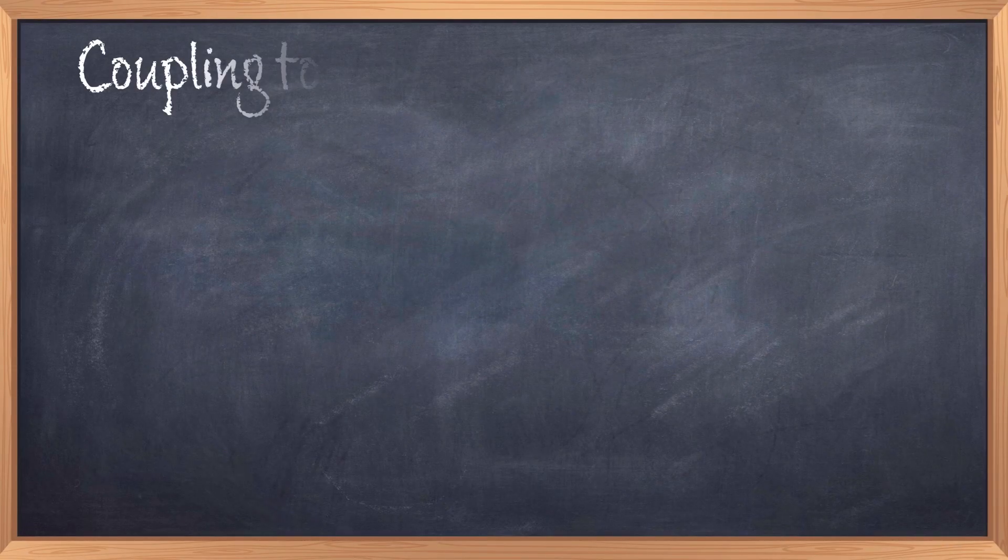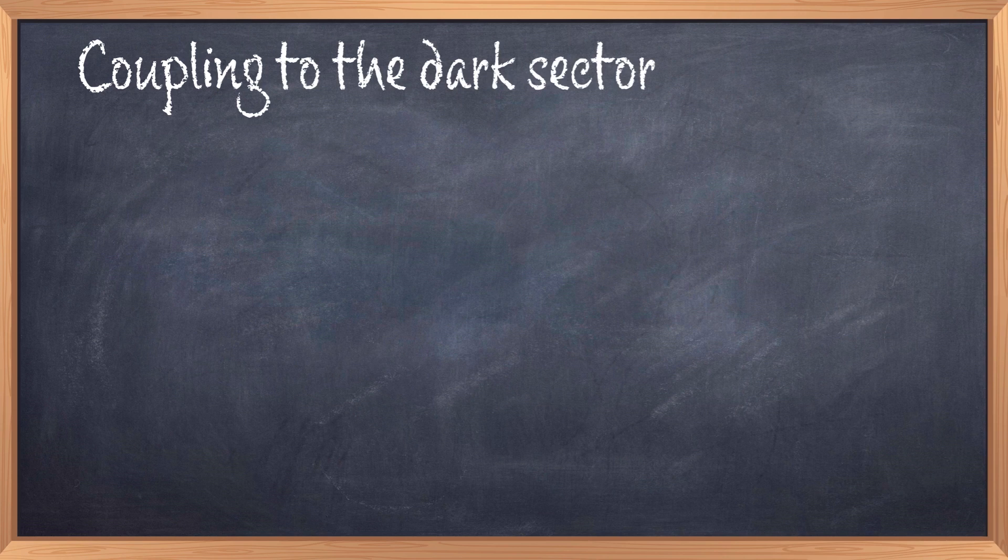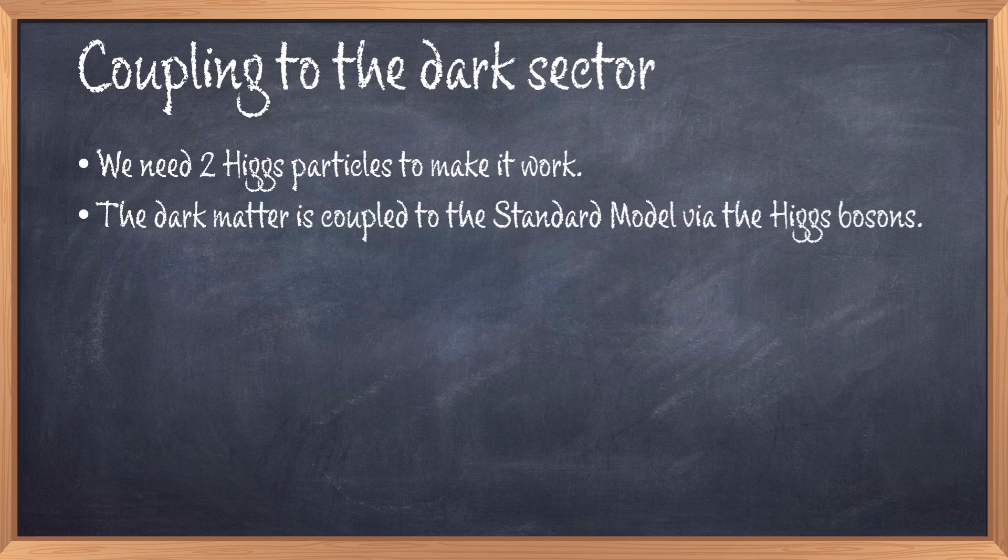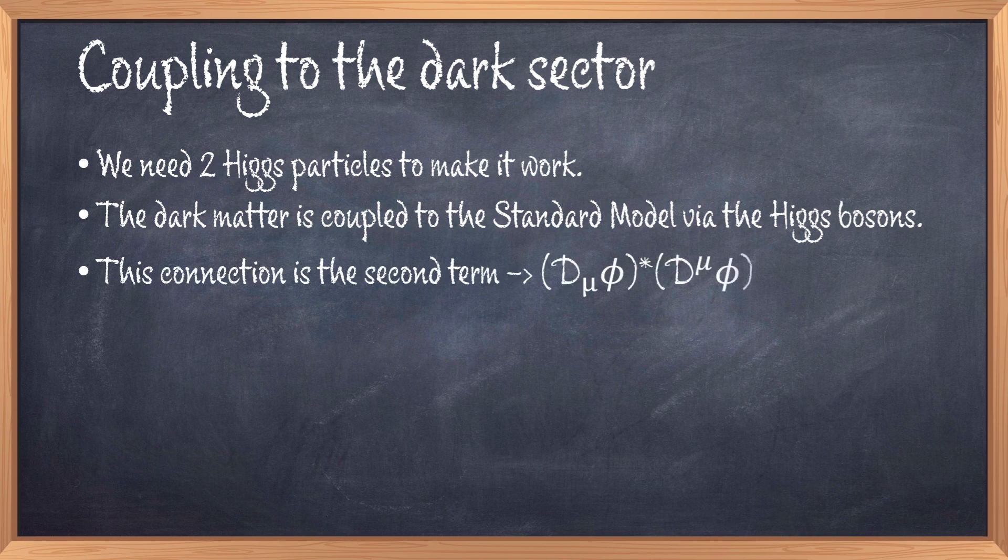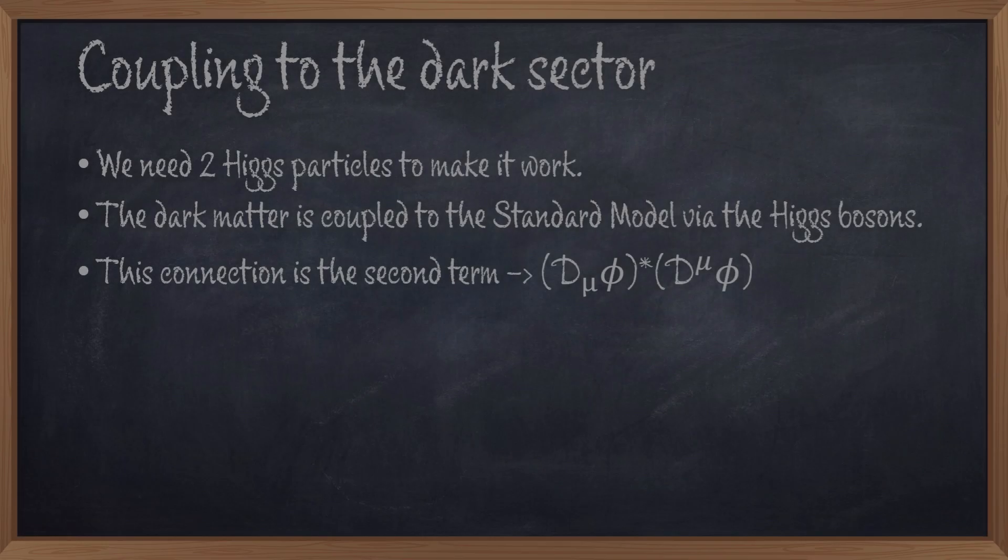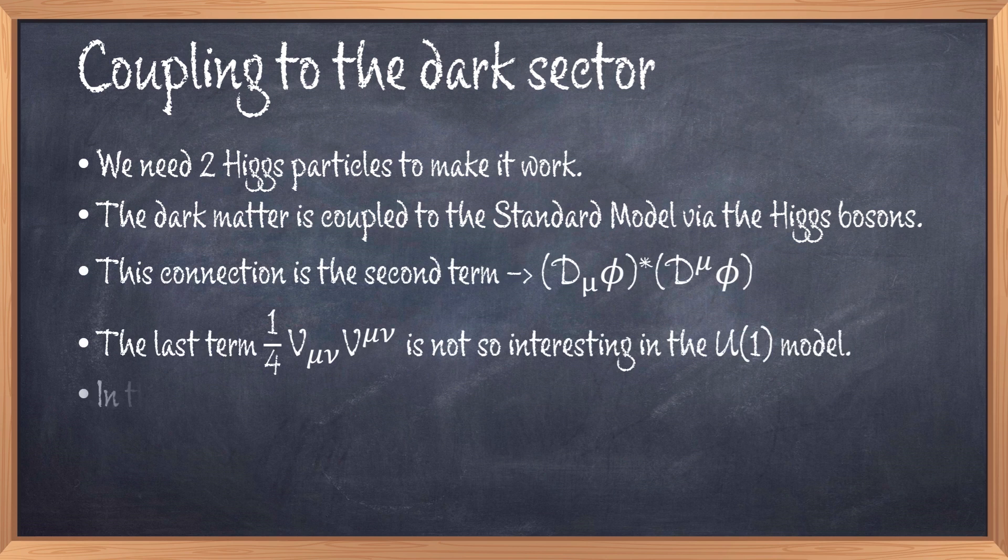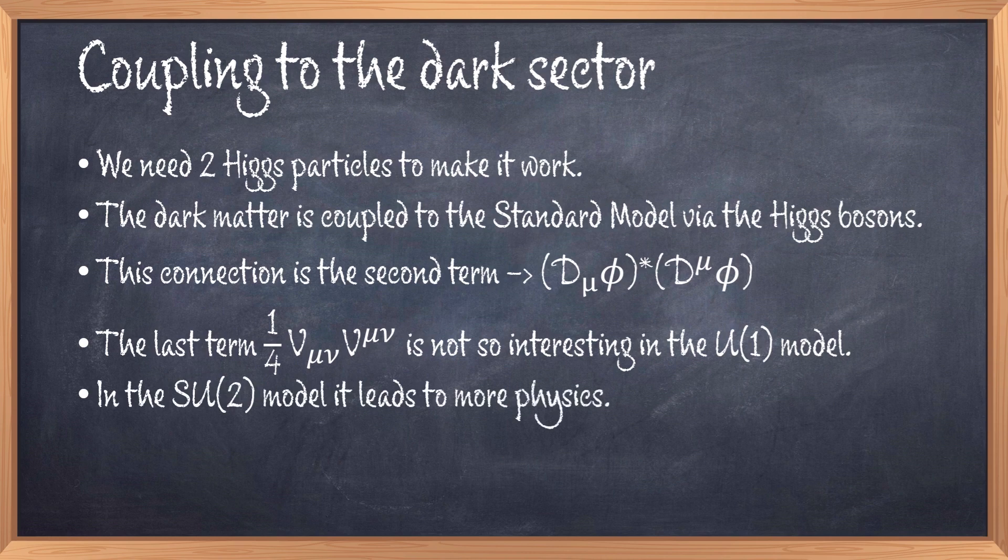An obvious question is how this standard model is now connected to the dark matter sector. In other words, how does the standard model couple to the dark matter vector boson particle? We just discussed the Higgs part, and one of the reasons we need this new Higgs potential is that we get a way to connect the standard model particle, which we know exists, to a new Higgs, which is hypothetical. How does this help, you might ask? Well, now we can connect the dark matter particle to the new hypothetical Higgs, and thus via the Higgs the dark matter connects to the standard model. That is why the title is dark matter via Higgs portal, the connection between the Higgs particles comes via the second term in our equation. The last term with the gauge field is not so interesting in the U1 model, but in the U2 model it leads to some extra physics, some additional physics.